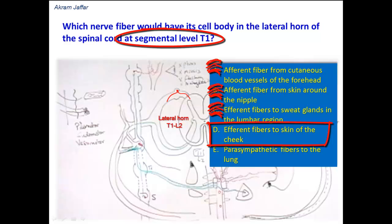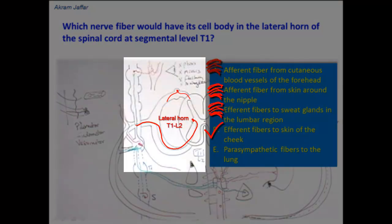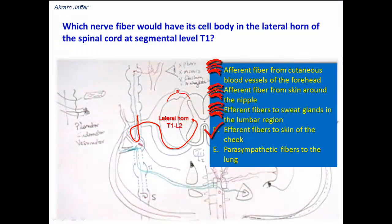Option D: efferent fibers to the skin of the cheek. This option is correct because the skin is supplied by pilomotor, sudomotor, and vasomotor sympathetic fibers. In the cheek — in the head and neck in general — these fibers are derived from the upper four thoracic spinal cord segments. The preganglionic fibers derived from the upper thoracic segments reach the sympathetic trunk, ascend into the cervical region, and synapse in the three cervical ganglia, then are distributed to the head and neck. So the skin of the cheek receives sympathetic fibers that have originated from segmental level T1 of the spinal cord.